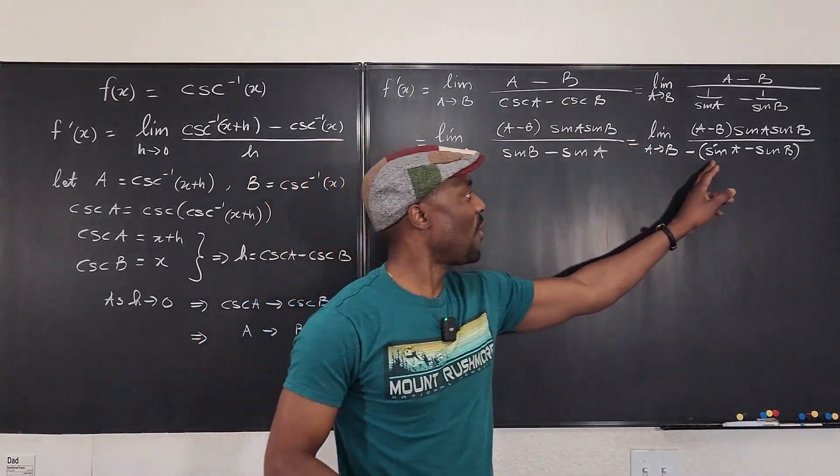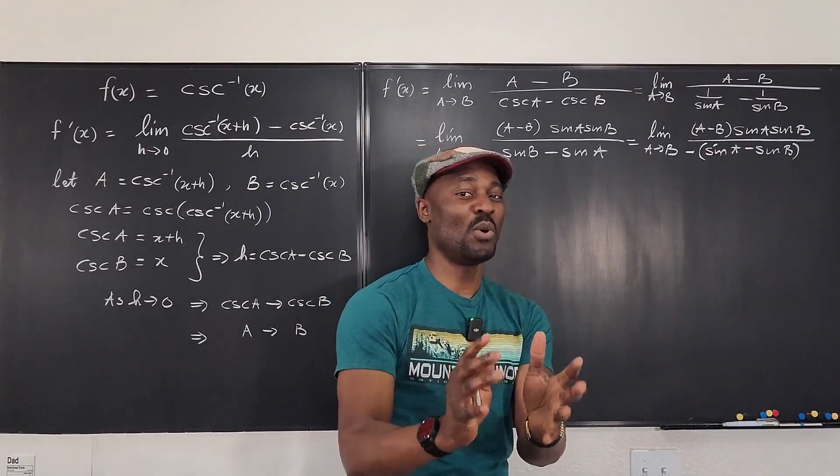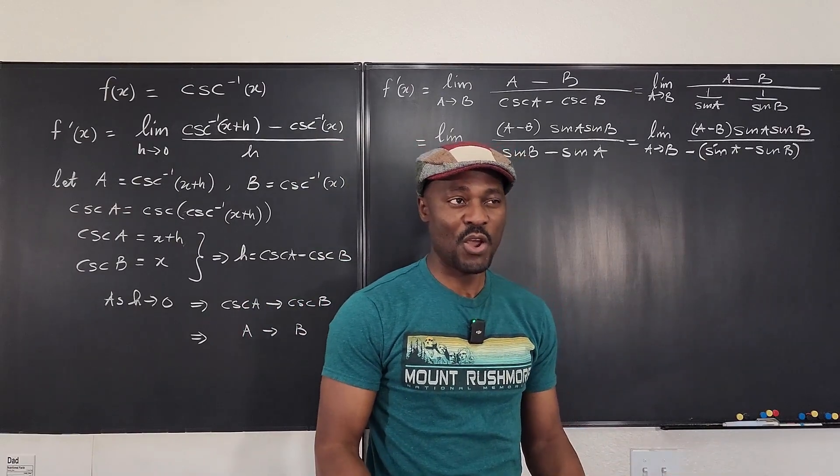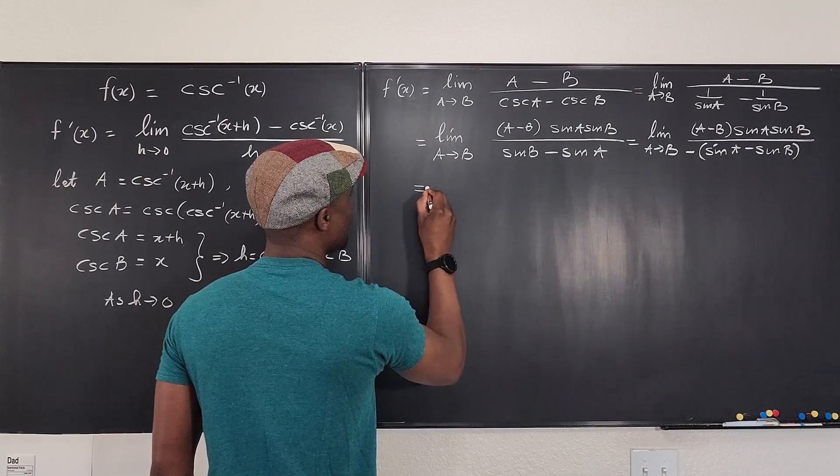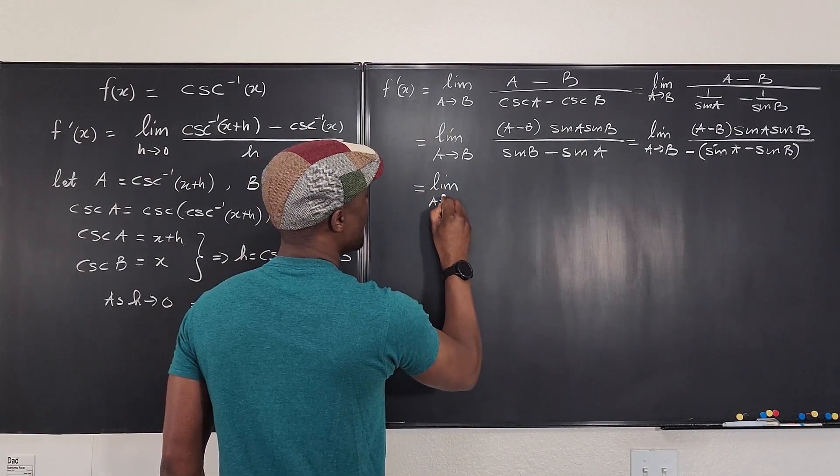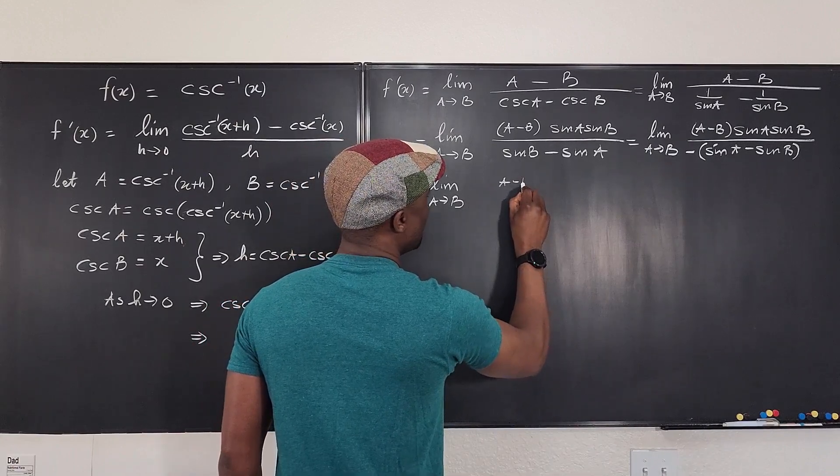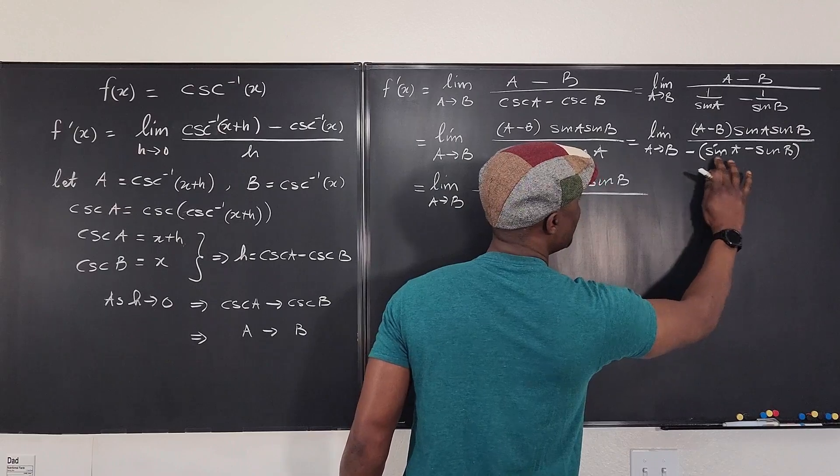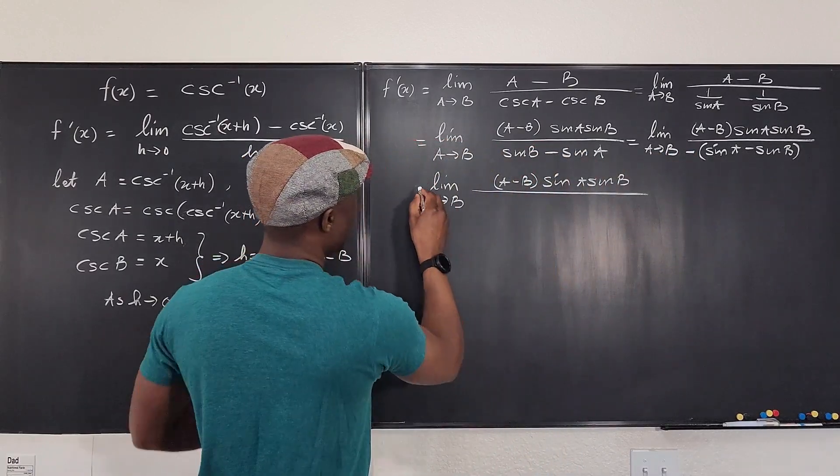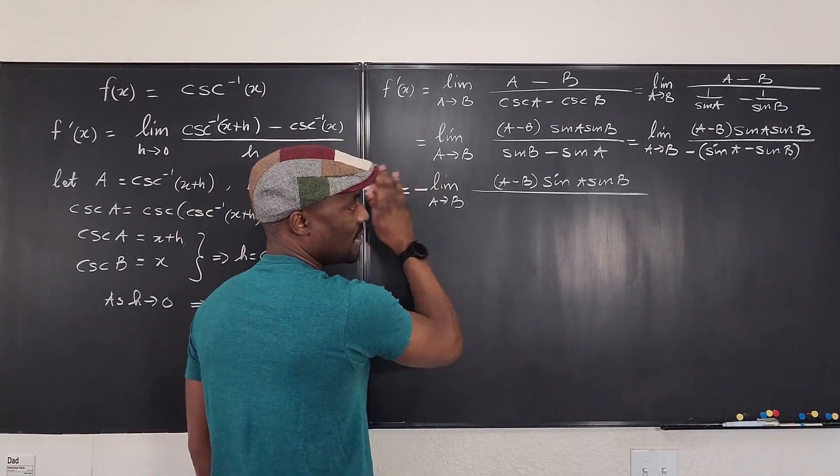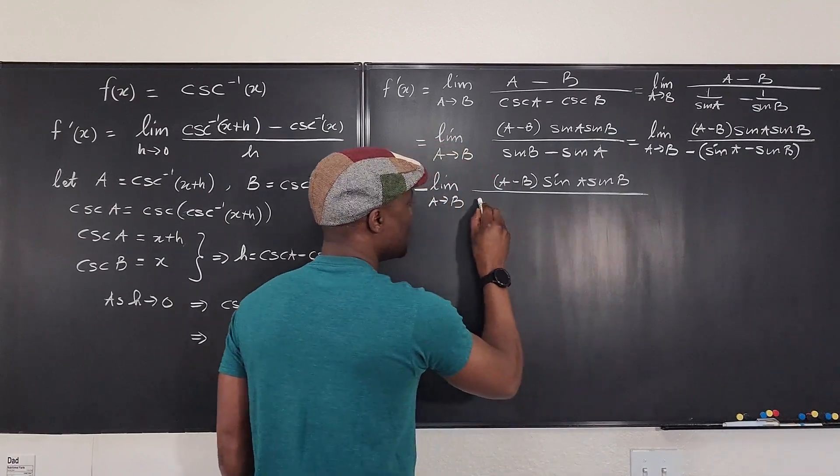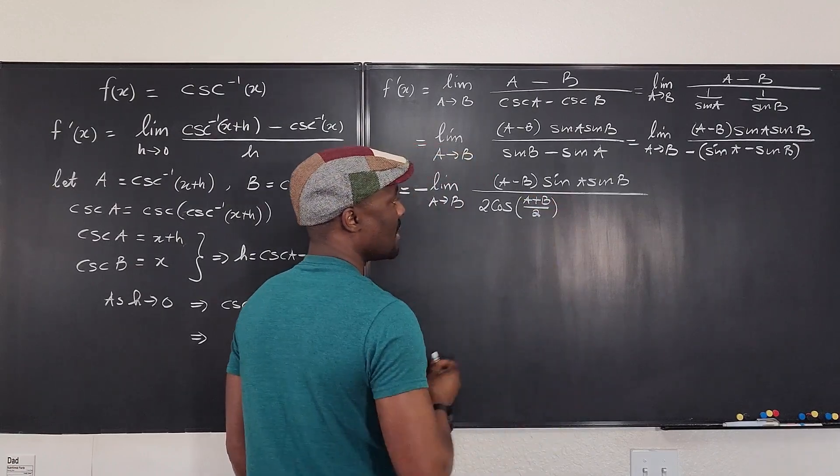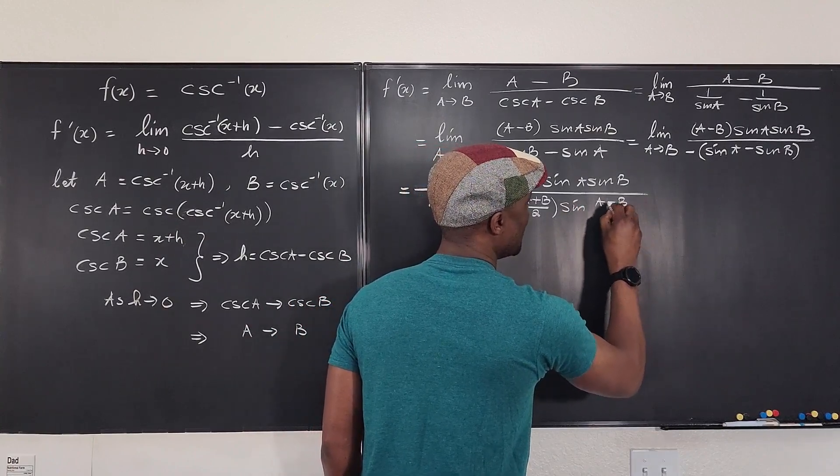Now, this is where it gets beautiful because I want it to be sine a minus sine b. So I can undo this by putting a minus sign. If I factor out a minus sign, this becomes sine a minus sine b. Let's rewrite this. So this is going to be with a minus sign, the limit as a goes to b of a minus b times sine a sine b divided by negative with parenthesis, then I have sine a minus sine b.